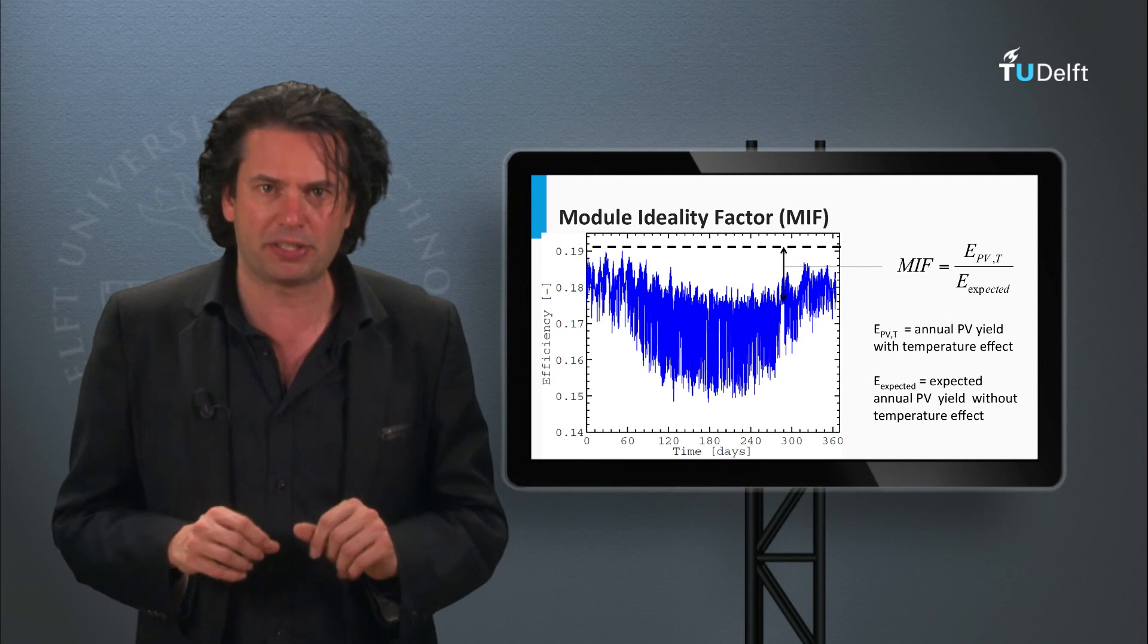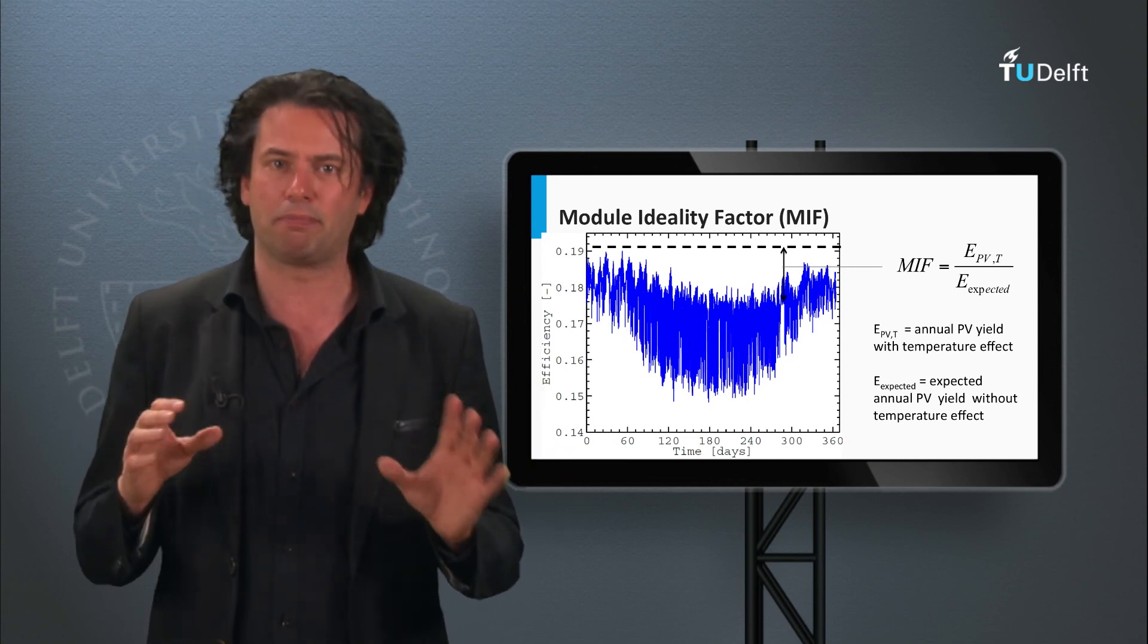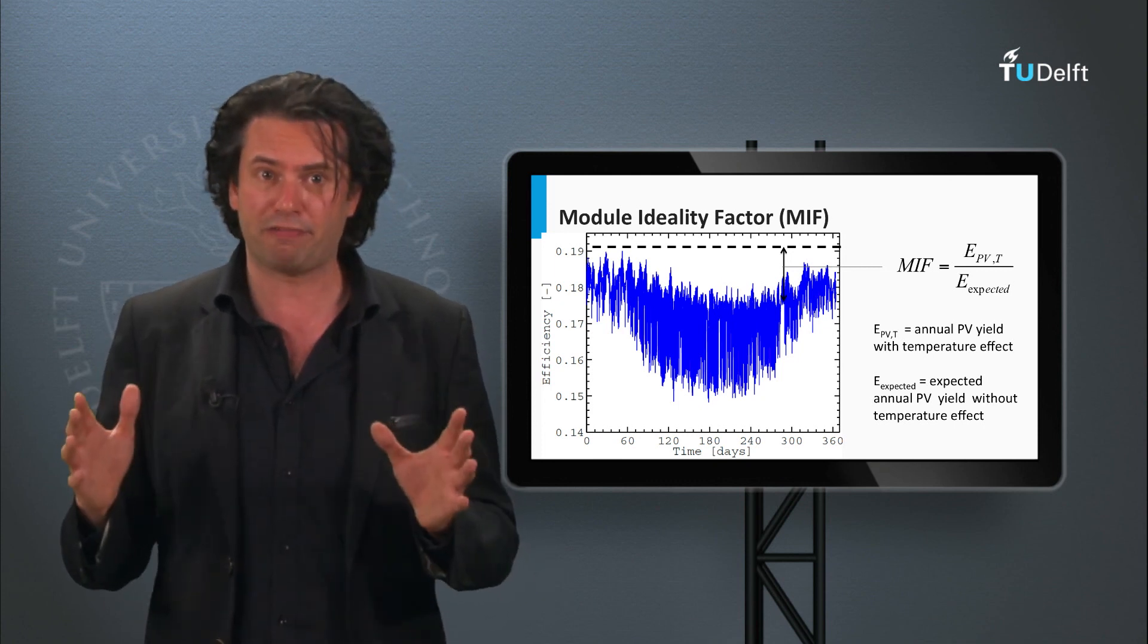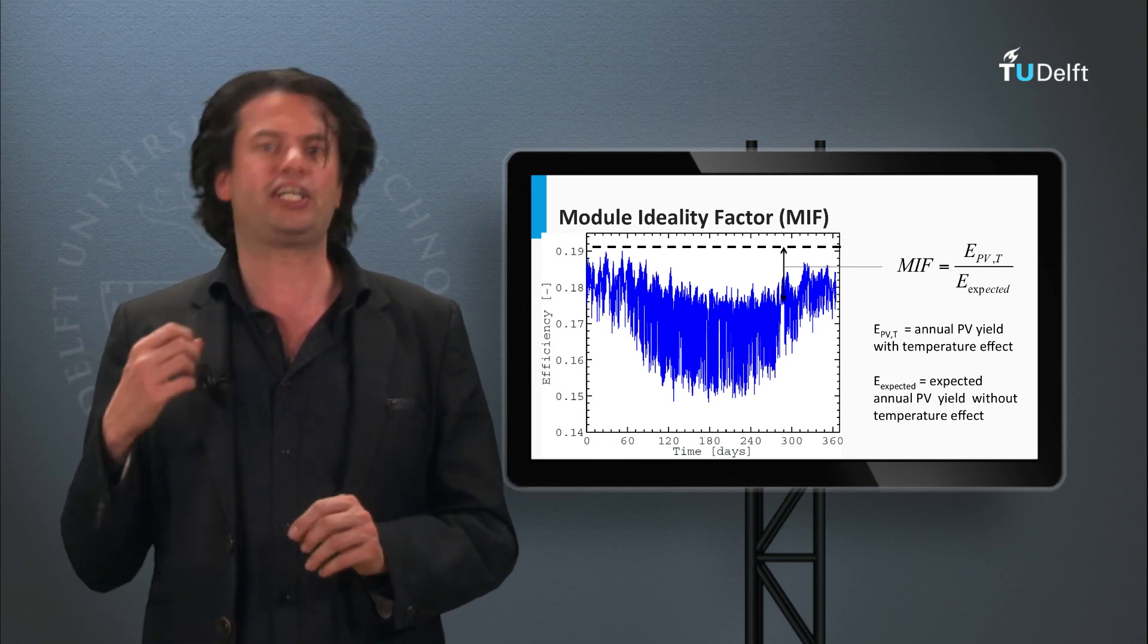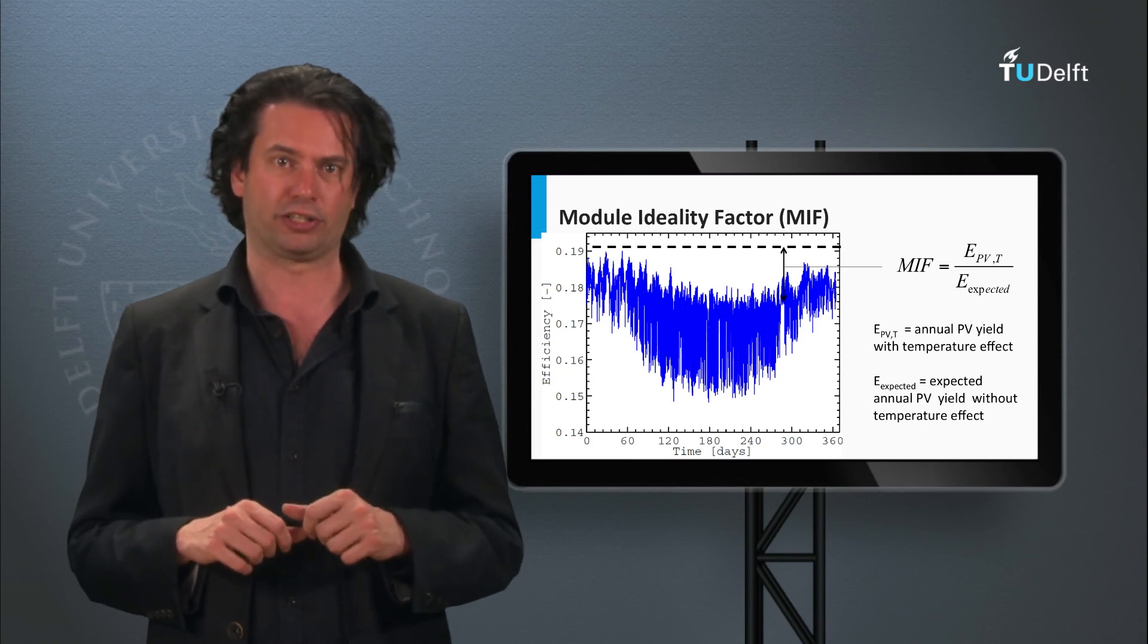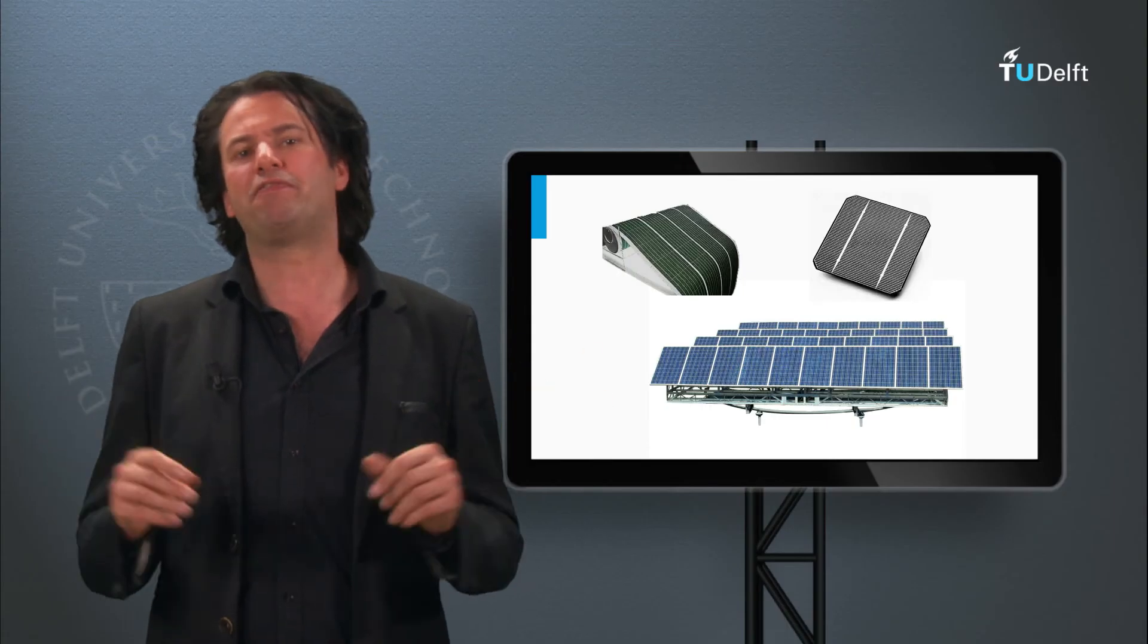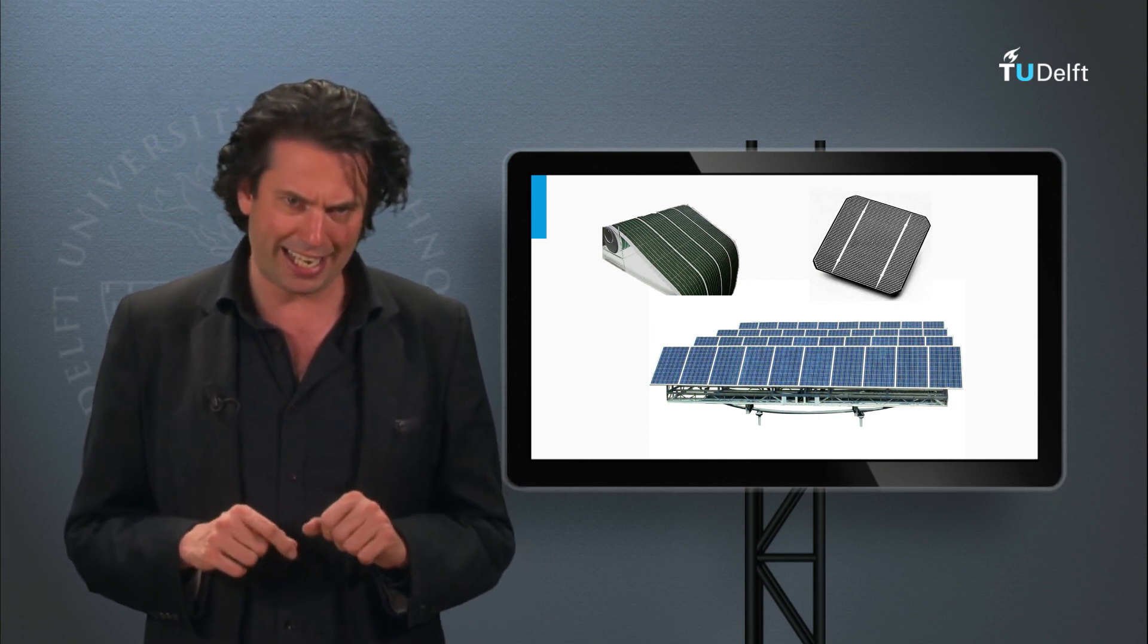Now, the extent to which the temperature impacts the module output is a function of the PV technology and the manufacturing process, which collectively decides the temperature coefficients of the PV module. The temperature effect is also a function of the ambient conditions. For the same technology there could be a deviation in the temperature coefficients due to the manufacturing processes and other design modifications. The following graph shows the spread of a few of the common silicon-based modules based on their module ideality factors and the temperature coefficient. These numbers have been calculated after modeling the temperature effects of these PV modules for the ambient conditions in the Netherlands in the year 2012. The Sanyo HIT module shows the highest module ideality factor owing to its low temperature coefficients of power. More PV technologies are being analyzed at the Delft University to understand the extent of the temperature effects.